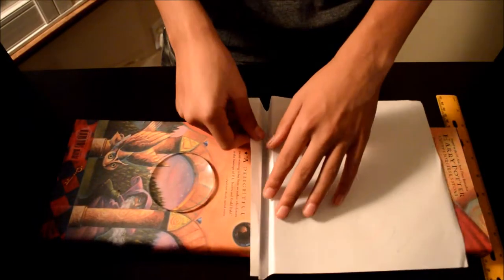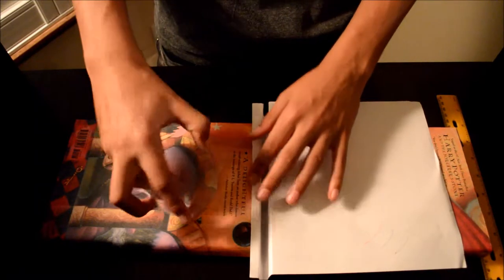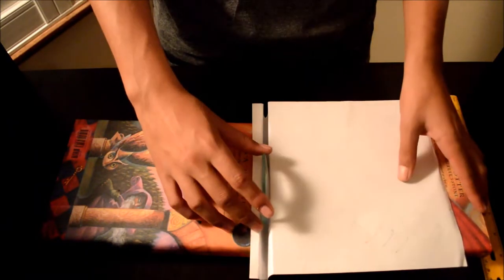Neatly fold the paper so it fits in between the two books, and take the convex lens and put it in the crevice.